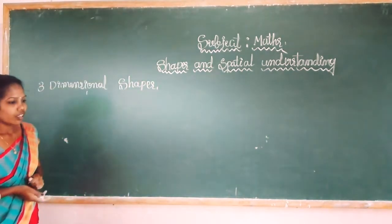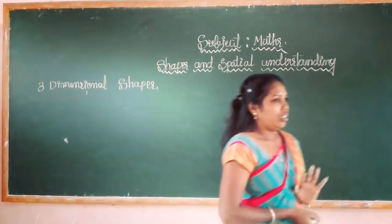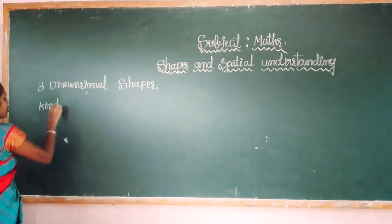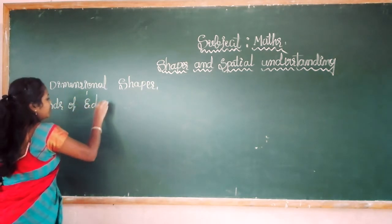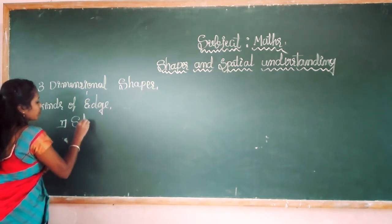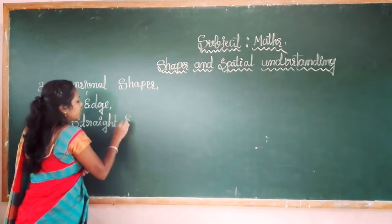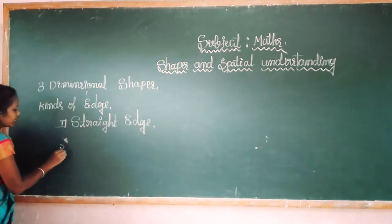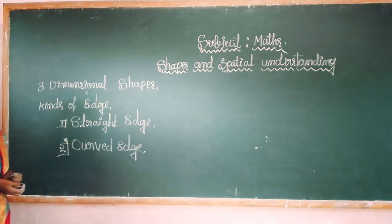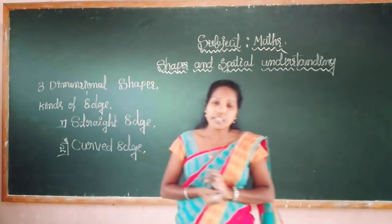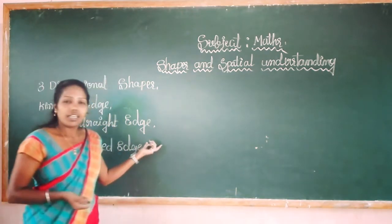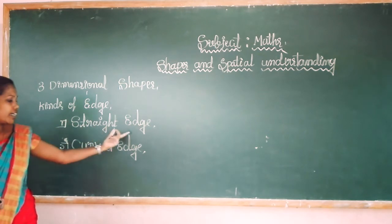Ok, students. Next we will learn kinds of edges. There are two kinds of edges. One is straight edge, and the other one is curved edge. In the previous class you learned what is lines and different kinds of lines — horizontal line, vertical line, curved line, and slanting line. Similarly, there are two kinds of edges: one is straight edge and the other one is curved edge.